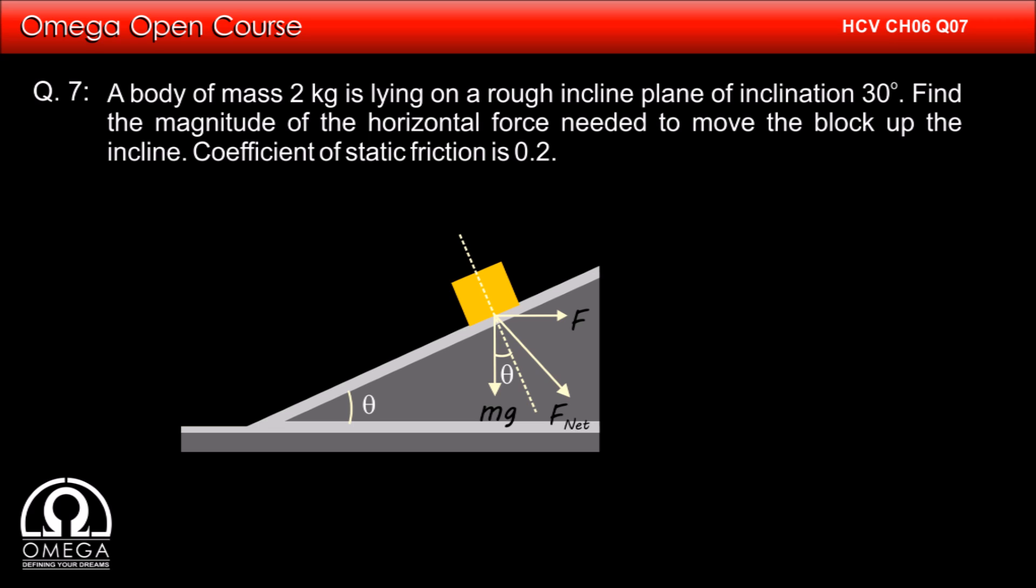From our discussion on angle of friction, we know that F net must be at an angle phi, where phi is tan inverse mu with the normal, for the block to move.